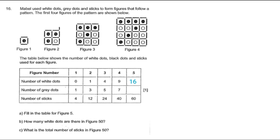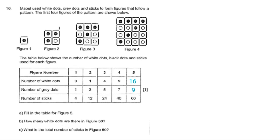Let's look at the number of grey dots. For figure 1 it's 1, figure 2 is 3, figure 3 is 5, figure 4 is 7 — which are odd numbers. So for figure 5, 7 plus 2 is 9.